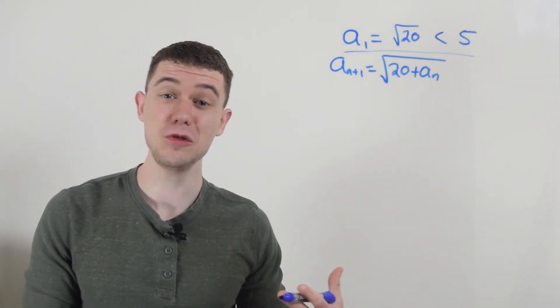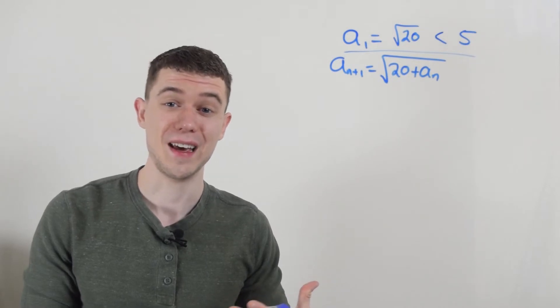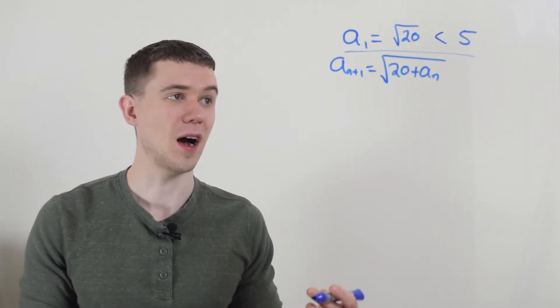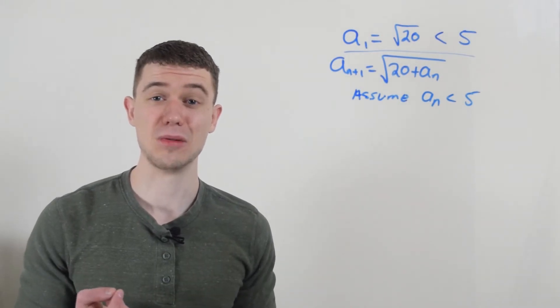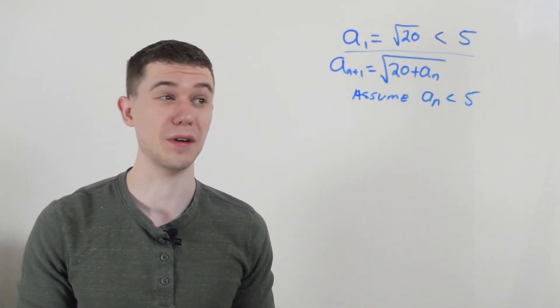And then I assume that's true for the nth term or the kth term. So I'll just assume that a_n is bounded by five. And then what I have to show is that the a_{n+1} term is bounded by five.